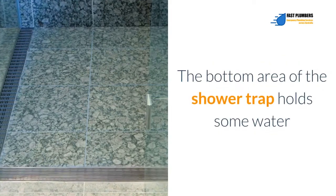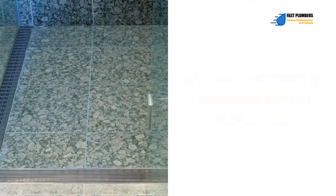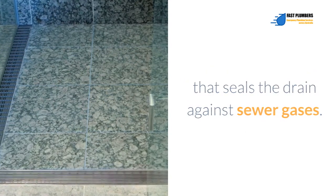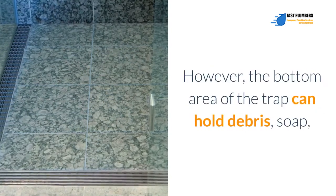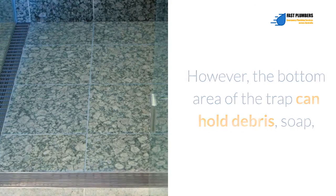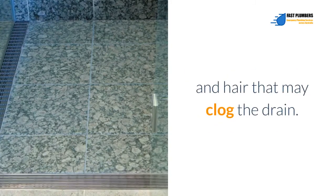The bottom area of the shower trap holds some water that seals the drain against sewer gases. However, the bottom area of the trap can hold debris, soap, and hair that may clog the drain.